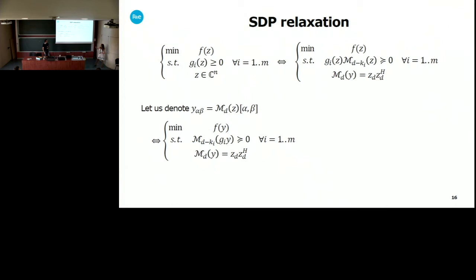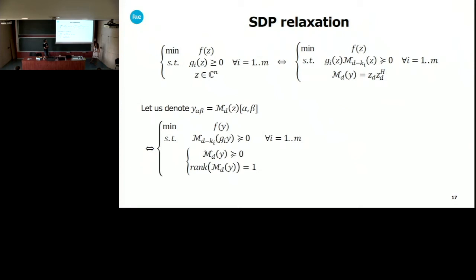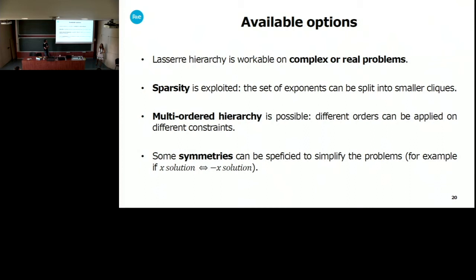You can rewrite your original problem introducing the moment matrix of order D. Then you can replace the original variables Z_D with the coefficients of the moment matrix, the Y. The link to the original variables is only in the last constraint. You can reformulate this last constraint by two equivalent conditions: the moment matrix has to be SDP, and its rank has to be one. To get an SDP relaxation, you simply remove the rank constraint.